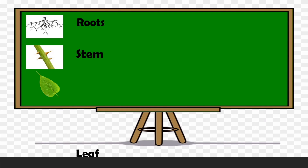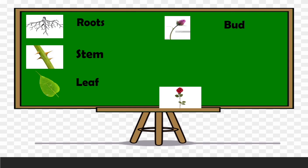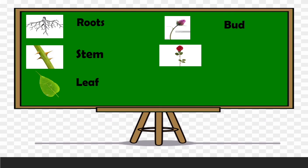Now let us identify the parts of the plants. Shall we start? What is this? This is a root. What is this? This is a stem. What is this? This is a leaf. What is this? This is a bud. What is this? This is a flower. What is this? This is a fruit.